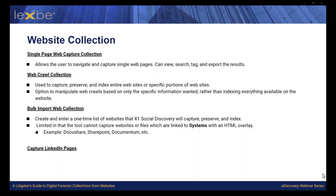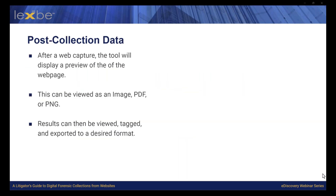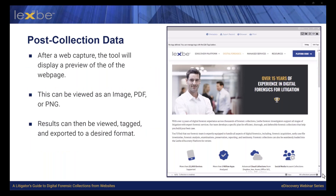By using the X1 Social Discovery tool, after a website has been collected — as you can see on the right-hand side of the screen — you can see the preview of the website that has been collected. For this example, we collected a portion of our Lexbe website for a support ticket submission page. We are able to view the preview of the collected website as an image, as a PDF, or in a PNG format. We can then review the web page, tag the relevant data to the investigation, and export the data to a desired format.